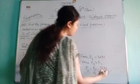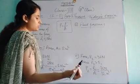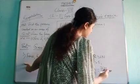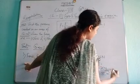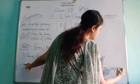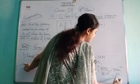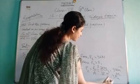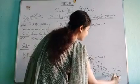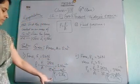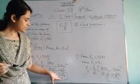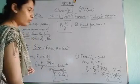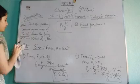We know that 3 into 12 gives us 36, so this will be 3 Newton per meter squared, or 3 Pascal. So we got P1 is 2 Pascal and P2 is 3 Pascal.